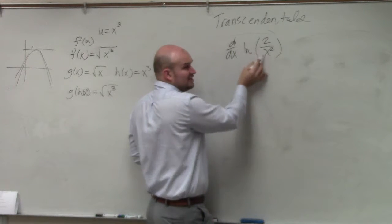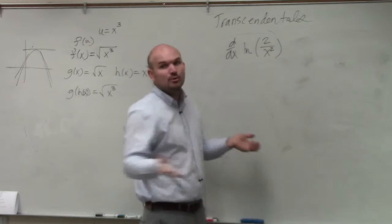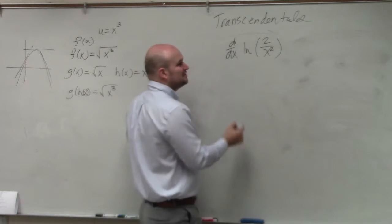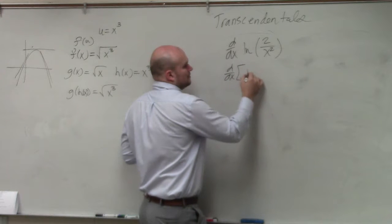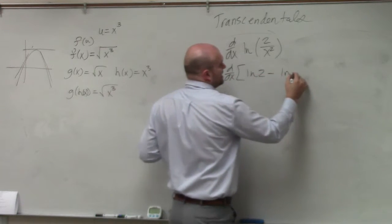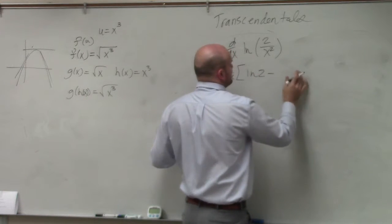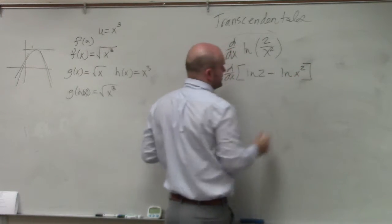Because then, you'd have to take the derivative of 2 over x squared, which would be the quotient rule. The best thing to do is use the properties of logarithms. ln of 2 minus ln of x squared.